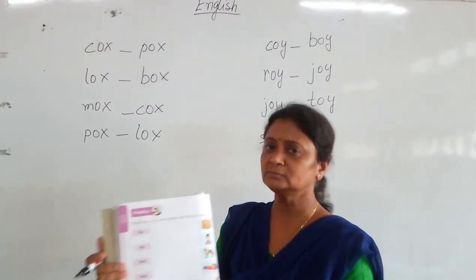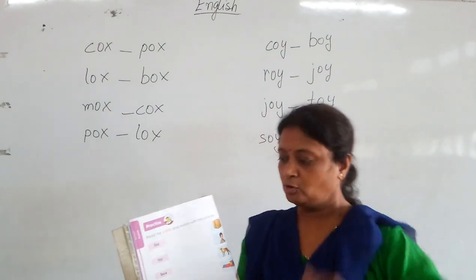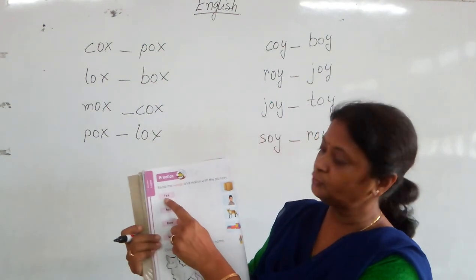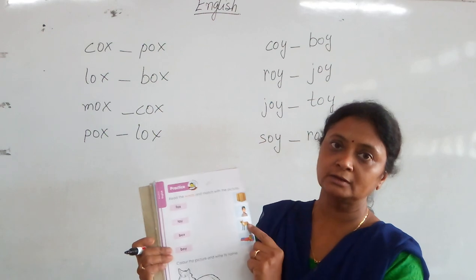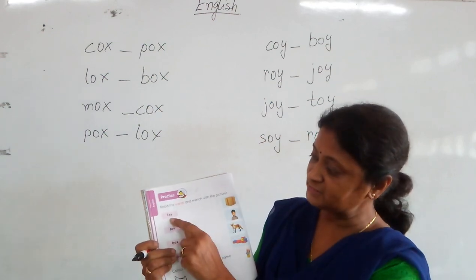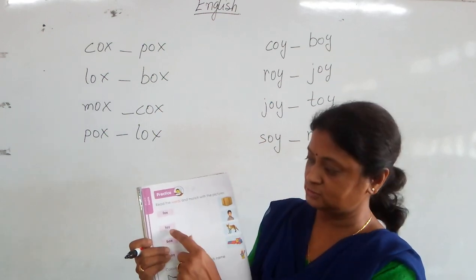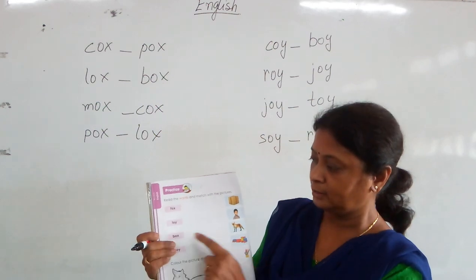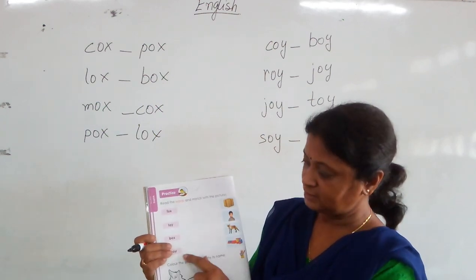So now we have the exercise of OX and OY. You have to match the words with their correct picture. This is Fox, Toy, Box.